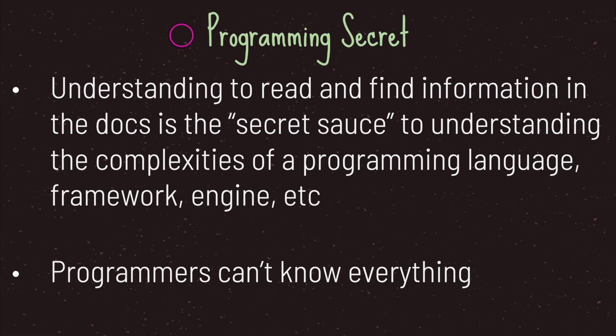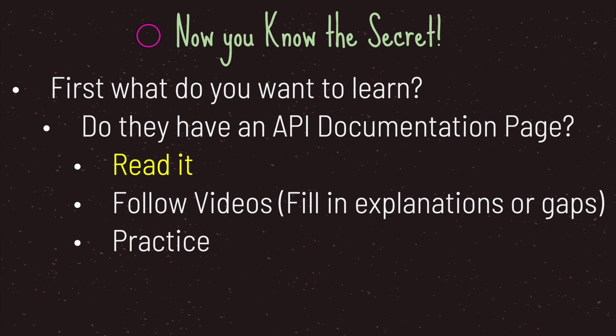The secret to programming is understanding how to read and find information in the API documentation — this is basically the secret sauce. The API documentation is our gateway into understanding the complexities of a programming language, a framework, an engine, and much more. So how do we apply it? First, ask yourself what you want to learn. Second, do they have an API documentation page? Third, if yes, go ahead and read it. Then find videos — free or paid — to fill in gaps and misunderstandings. And lastly, start practicing. That's the process of effective learning.